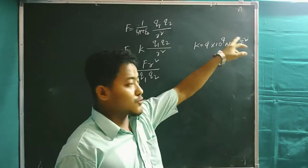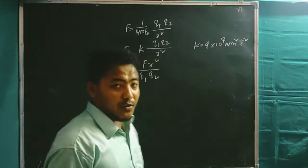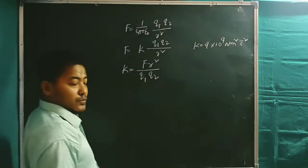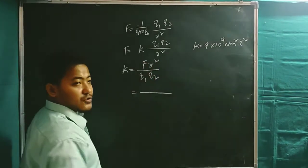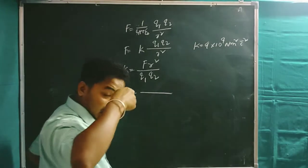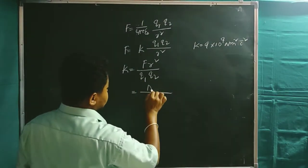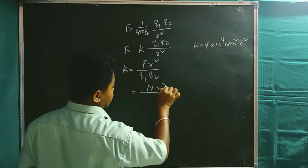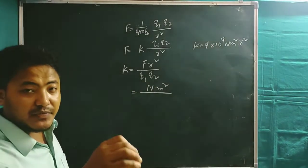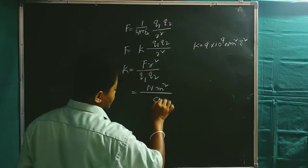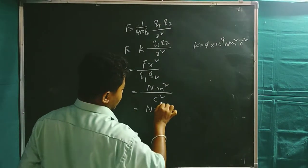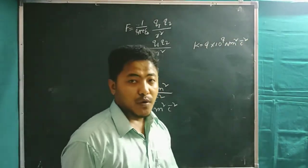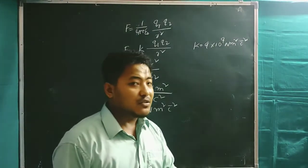We can see where the unit of k comes from: k = F·r² / (q1·q2). The unit of force is newton, r² gives meter squared, and q1·q2 gives coulomb squared. So the SI unit of k is newton·meter² per coulomb², which is exactly N·m²/C² — the SI unit of electrostatic constant k.